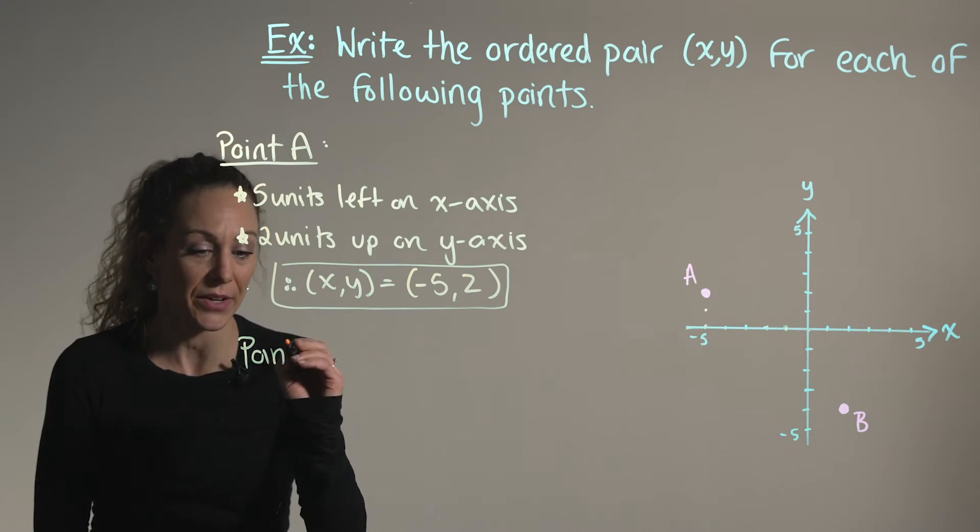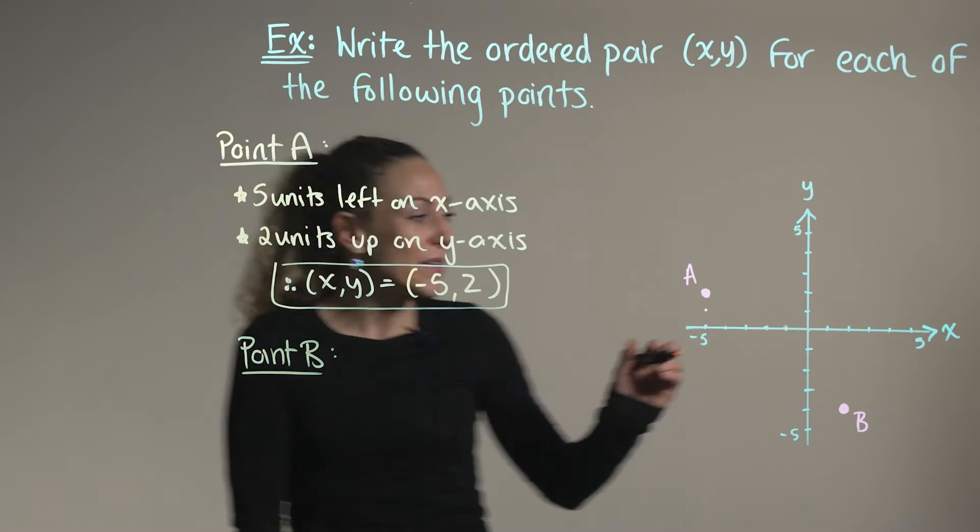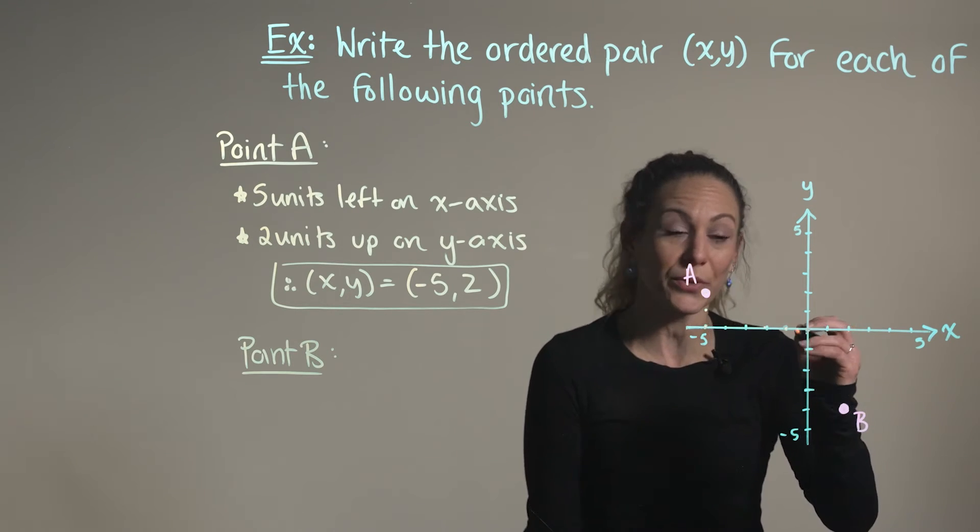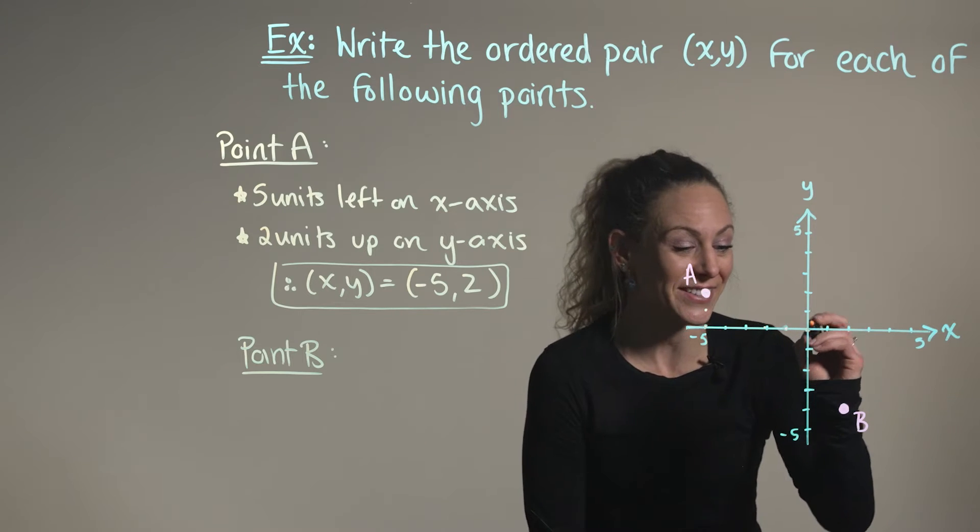Now we want to do the same thing here for point B. Again, beginning right here at the origin, we're thinking how many units are we moving to the left or right on our x-axis?